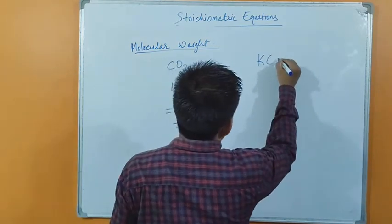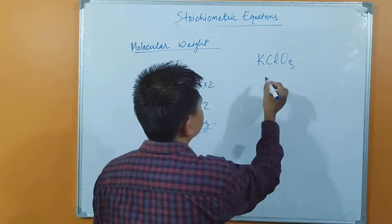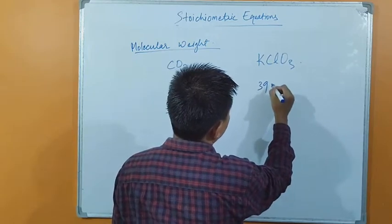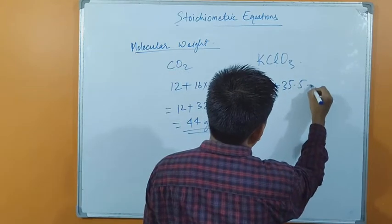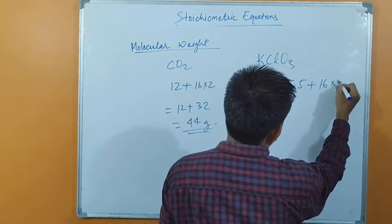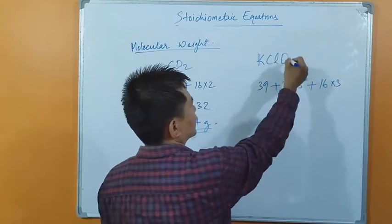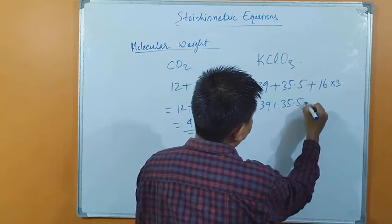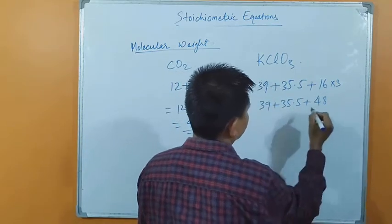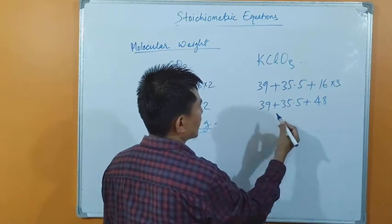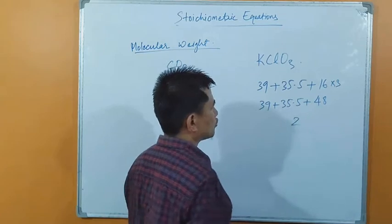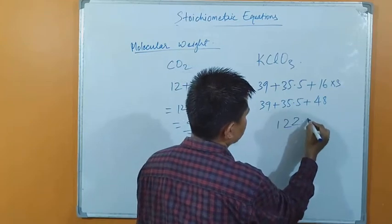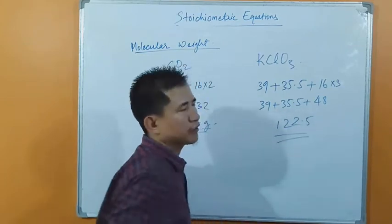Suppose we have KClO₃. Let us calculate the molecular weight of potassium chlorate. Potassium is 39, plus chlorine is 35.5, plus oxygen is 16 × 3 = 48. Adding up: 39 + 35.5 + 48 = 122.5 grams. This is the way how we calculate the molecular weight of a substance.